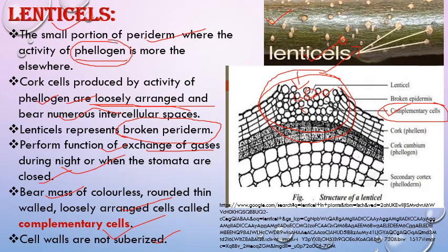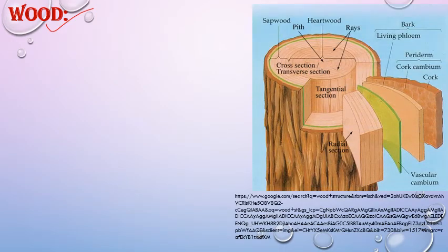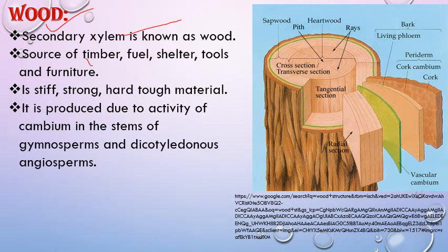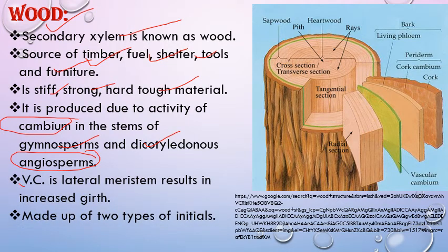Cell walls of complementary cells are not suberized. Wood is secondary xylem — in botany, secondary xylem is called wood. It is a hard structure and economically important for humans, used as fuel, timber wood for making paper and other products. Secondary xylem is the source of timber, fuel, shelter, tools, and furniture. It is produced by the activity of vascular cambium in stems of gymnosperms and dicotyledonous angiosperms. Vascular cambium is the lateral meristem consisting of two types of initials — fusiform initials and ray initials.